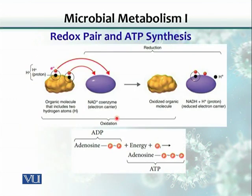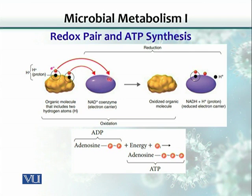This diagram shows a redox pair and how ATP is synthesized. An organic molecule — for example, glucose — donates two pairs of hydrogen, each consisting of a proton and an electron. The carrier, in this case the coenzyme NAD+, receives these electrons and protons. As a result, the organic molecule becomes oxidized and the NAD+ becomes reduced.